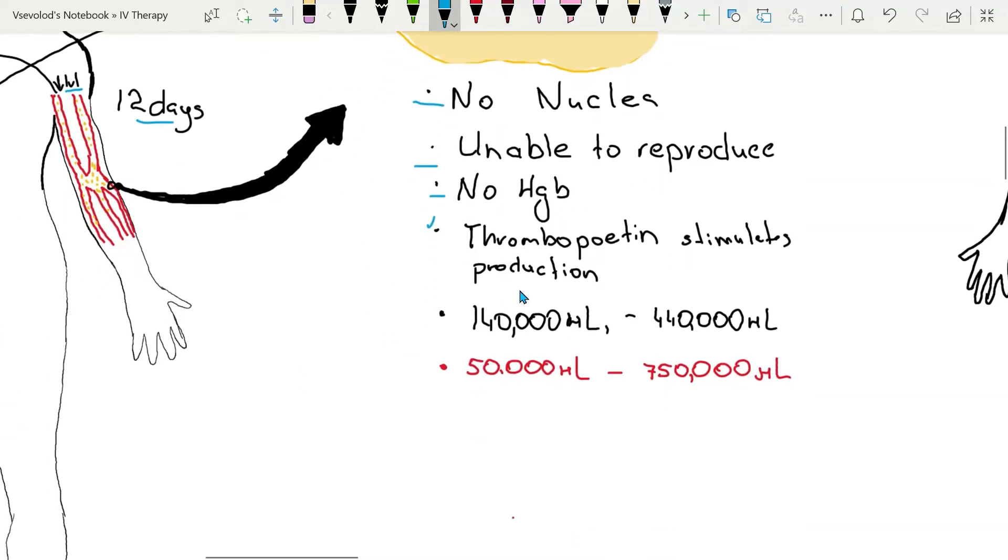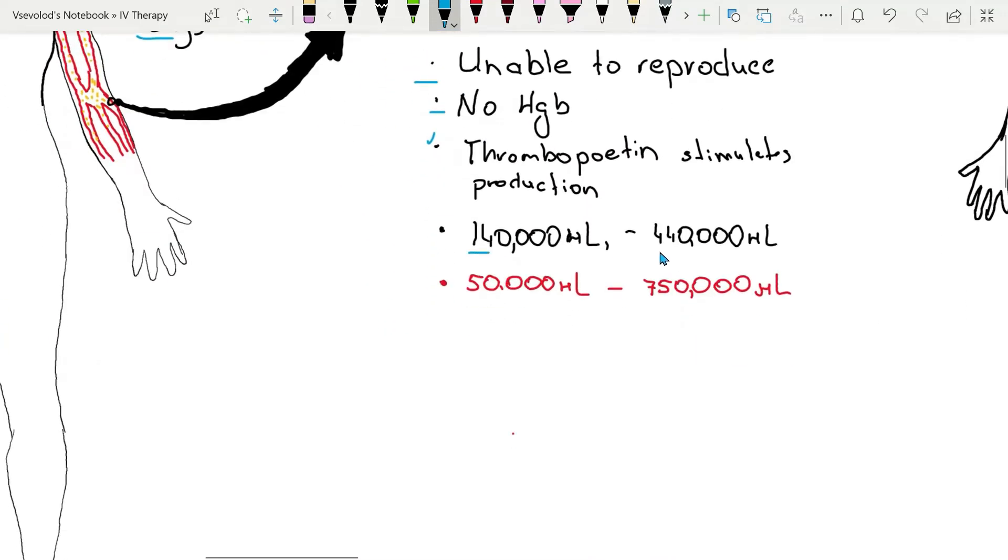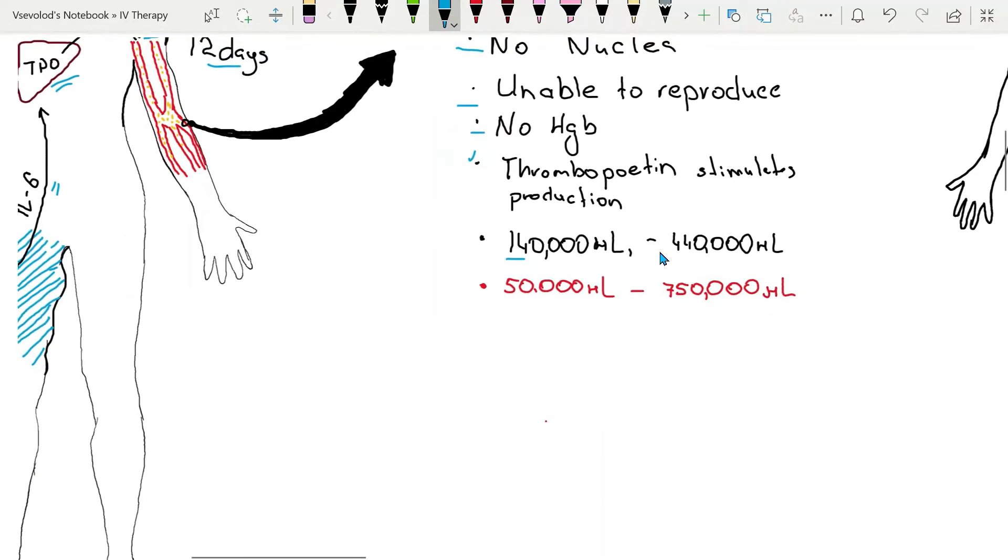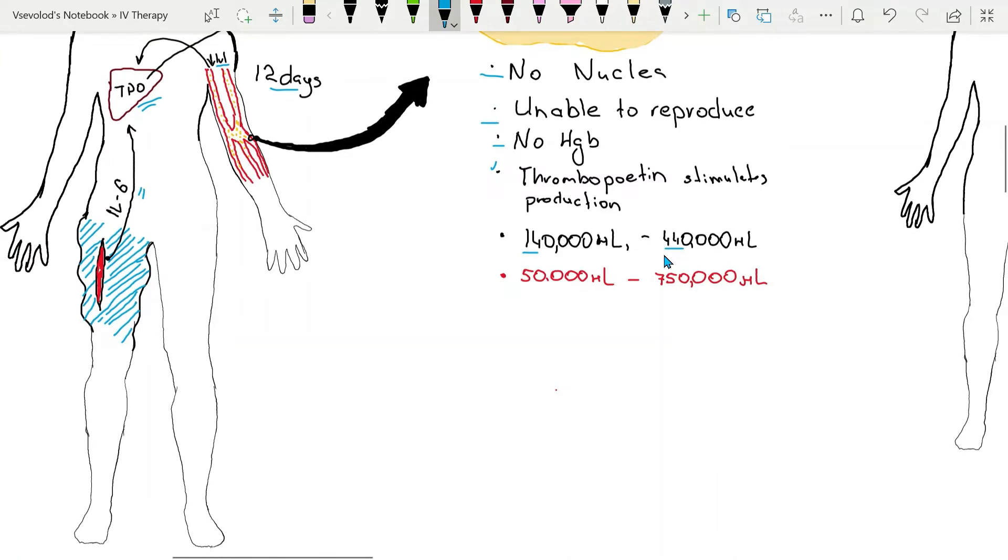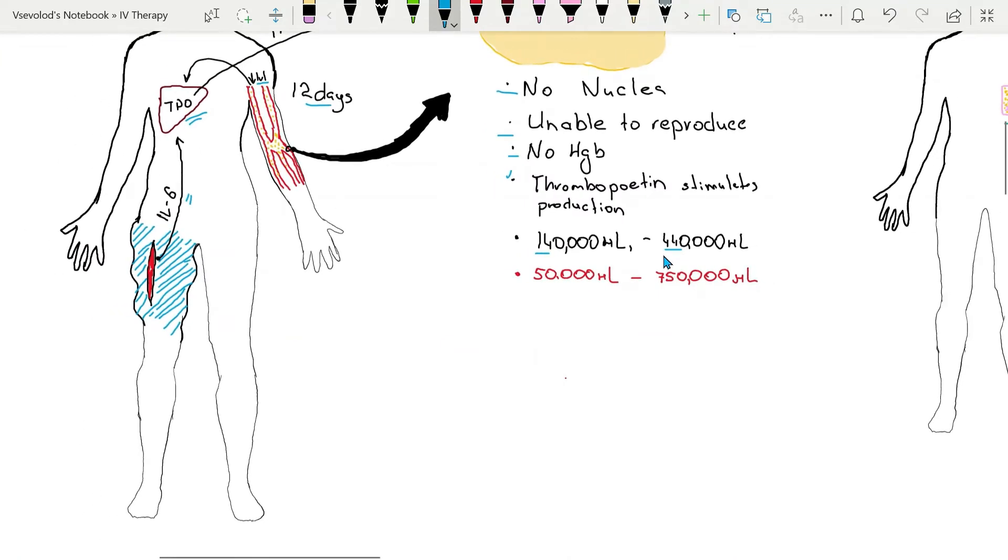Normal platelet count is from 140,000 platelets per microliter to 440,000 platelets per microliter. And it seems that physicians are not going to do anything about it until it is below 50,000 or above 750,000.